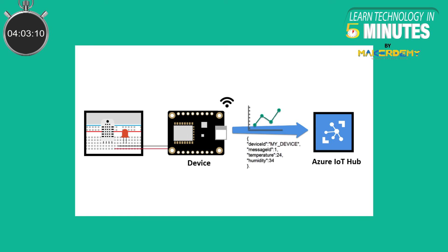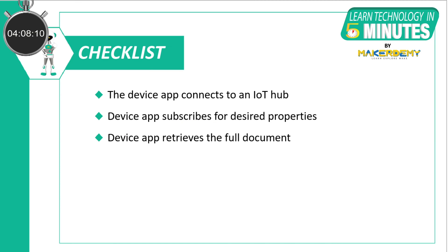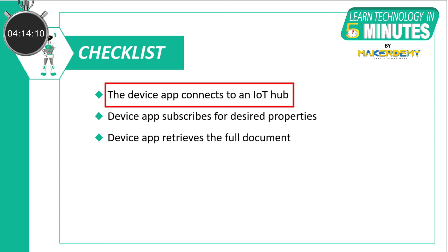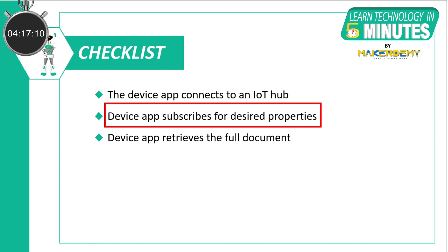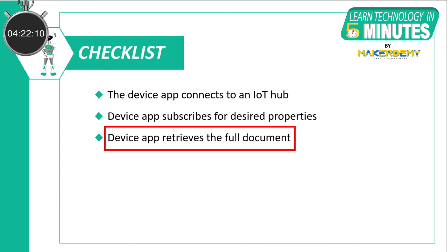The full desired property document is retrieved when an IoT device connects to the IoT Hub. The following flow must be ensured for full retrieval before the device gets disconnected: the device app connects to an IoT Hub, the device app subscribes for desired properties update notifications, and the device app retrieves the full document for desired properties.